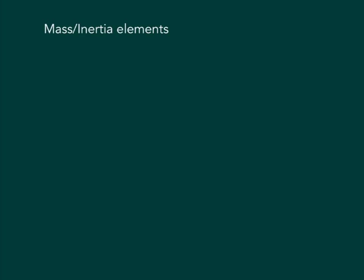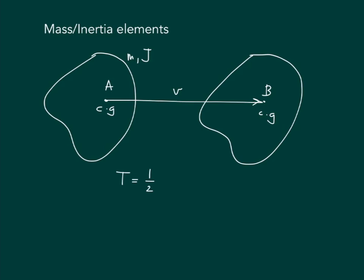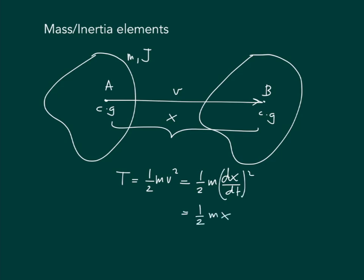The mass or inertia element is assumed as a rigid body. It can have kinetic energy as long as there is a velocity change of its body. Consider an object which is a rigid body having mass m and second mass moment of inertia J, with center of gravity at point A. The object moves to another location B with velocity V. The kinetic energy is defined by half m times V squared, or written as half m times x-dot squared.